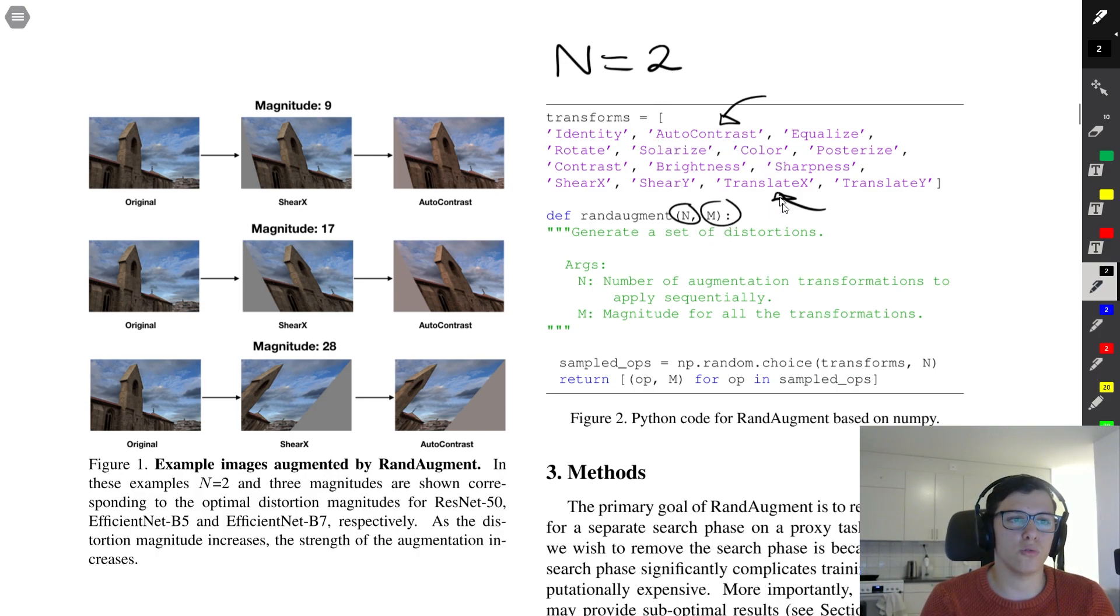Those two are chosen randomly. Then the second hyperparameter m is the magnitude that we want to apply these transformations. Perhaps you can do auto-contrast on a scale of different magnitudes. Those two are the hyperparameters. The algorithm is just two lines: they first choose the operations that they want to do dependent on this value n, and then they return that operation with the given magnitude value of m.